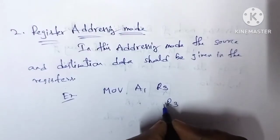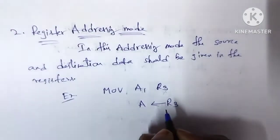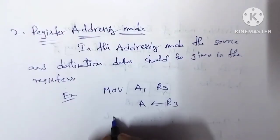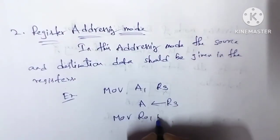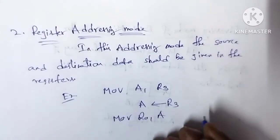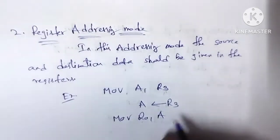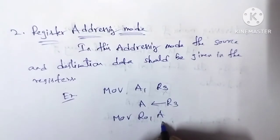The content of R3 is moved to the accumulator. Next example: 'MOV R0, A' — move the content of the accumulator to register R0. The content of the accumulator is transferred or moved to register R0.